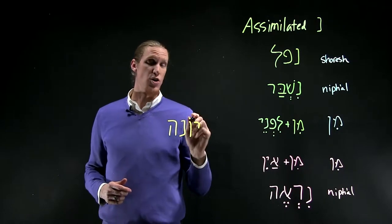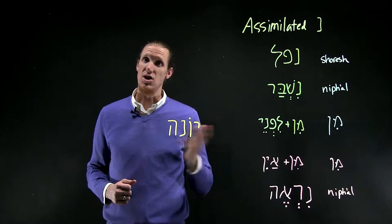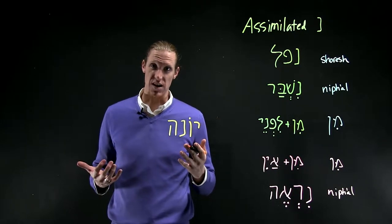The four weak letters are Yod, Vav, Noon, and He. They also spell Yona, which is kind of handy.